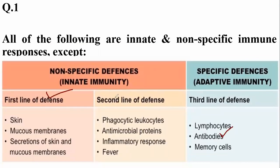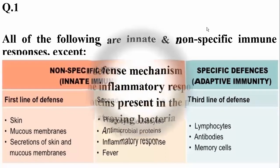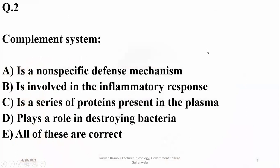The first and second lines of defense are non-specific or innate responses of the immune system. The complement system of proteins is a non-specific defense mechanism involved in the inflammatory response. It is a series of proteins present in the plasma and plays an important role in destroying bacteria.